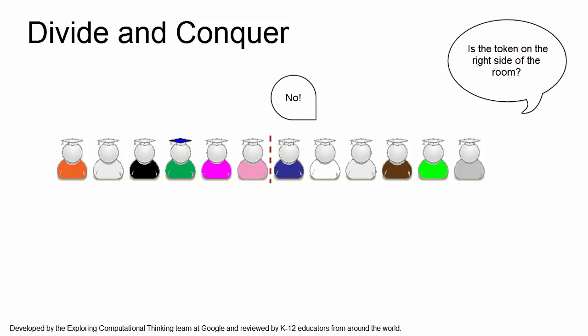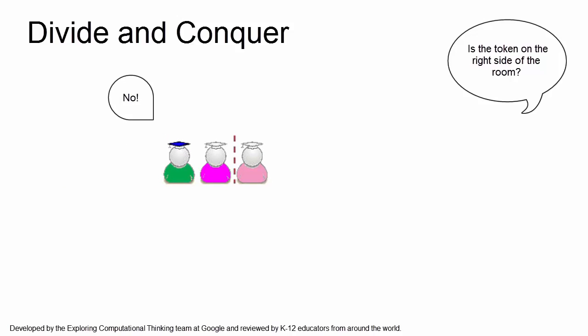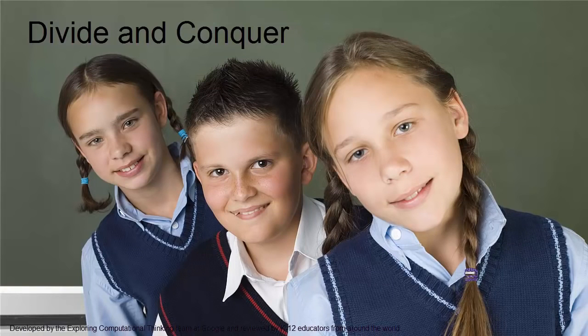In one question, you will determine in which half of the room the token is hiding. Your second question can divide the appropriate side of the room in half again, and so on until you find the token. It won't take long. Students should take turns practicing finding the token to get a good handle on the concept of divide and conquer.